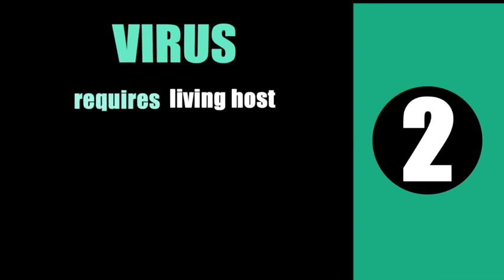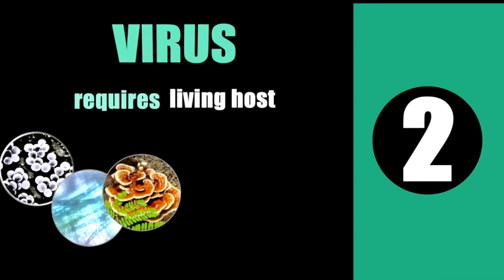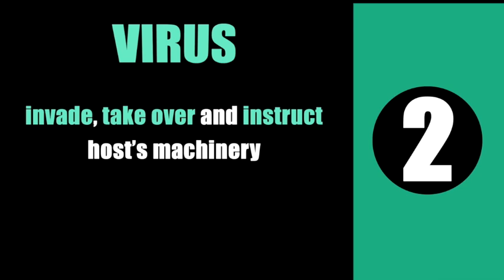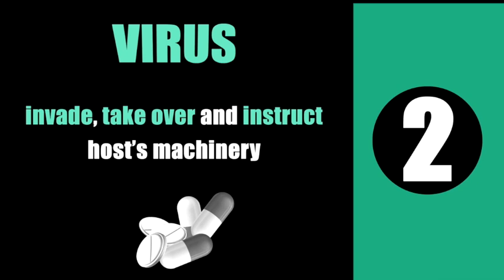Number 2. Viruses require living host cells such as bacteria, algae, fungi, protozoa, plants, and animals in order to multiply, since they do not have all the necessary machineries or molecules to multiply on their own. Viruses invade, take over, and instruct the machinery of their host to make and release new viruses. This poses a significant challenge in the development of antiviral drugs, since drugs that would interfere with the multiplication of viruses would also interfere with the function of their host. In fact, most antiviral drugs block virus replication by targeting the function of host cells.